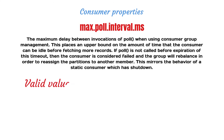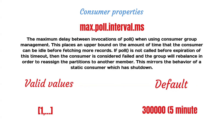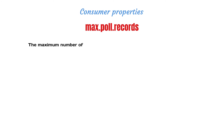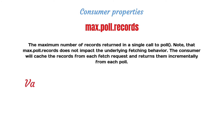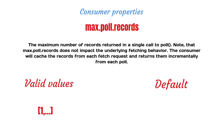Another property that could affect rebalancing is maxPollIntervalMs. This property specifies the maximum allowed time between calls to the consumer poll method before the consumer process is assumed to have failed. The default is 300 seconds and can be safely increased if your application requires more time to process messages. If you're using a Java consumer, you can also adjust maxPollRecords to tune the number of records handled in every loop iteration.